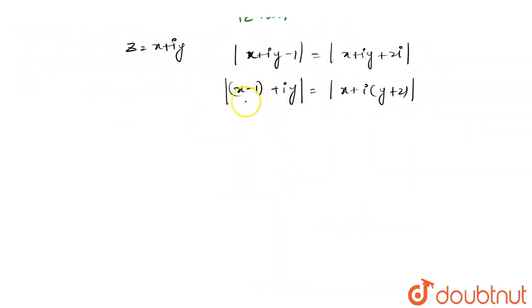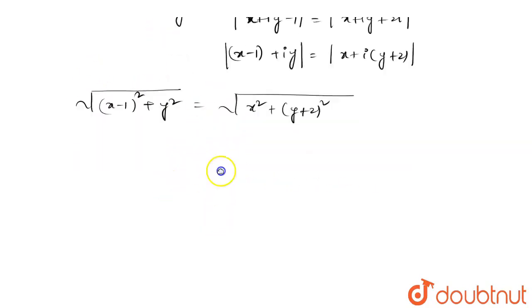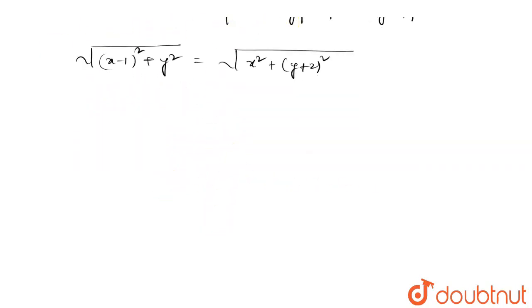Mod of something a plus ib is root of a square plus b square. So this becomes root of x minus 1 whole square plus y square, equal to mod of x square plus y plus 2 whole square. Now we square both sides, so we get x square plus 1 minus 2x plus y square.